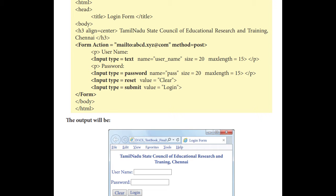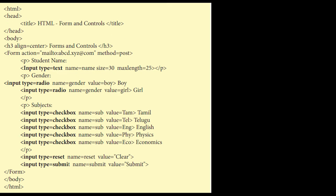And then let's see about the next program, which they have given in page number 278. HTML code to demonstrate form and form controls, that is text box, check box, radio buttons and all. Here also in the same way, HTML, head tag, title tag and then head tag they have closed, body tag. First the headline is given as forms and control, then form action is equal to the name they have given, method is equal to post.